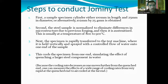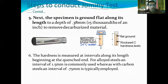In the third step, the specimen is rapidly transferred to the test machine where it is held vertically and sprayed with a controlled flow of water onto one end. This cools the specimen from one end, simulating the effect of quenching a larger steel component in water. Because the cooling rate decreases as one moves further from the quench end, one can measure the effect of a wide range of cooling rates — from very rapid at the quench end to air-cooled at the far end. The specimen is then ground flat along its length to a depth of 0.38 mm to remove decarburized material.